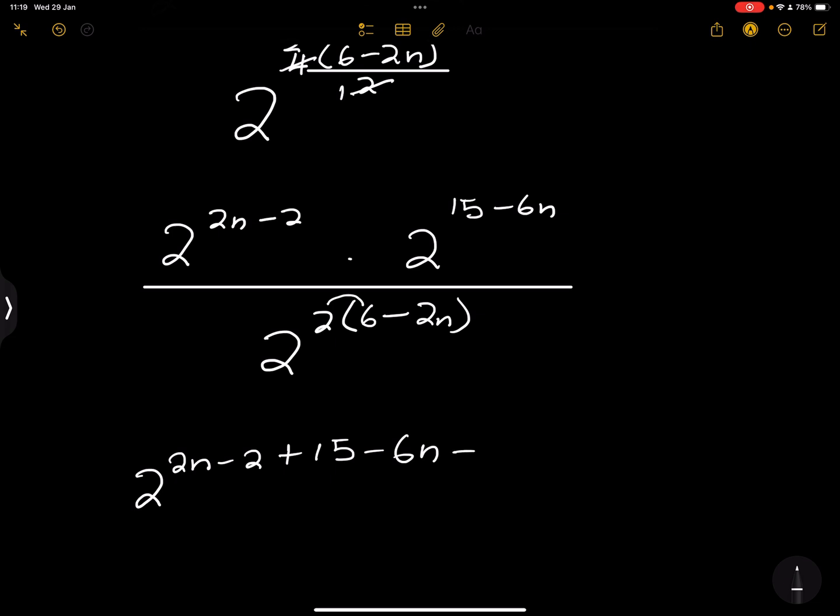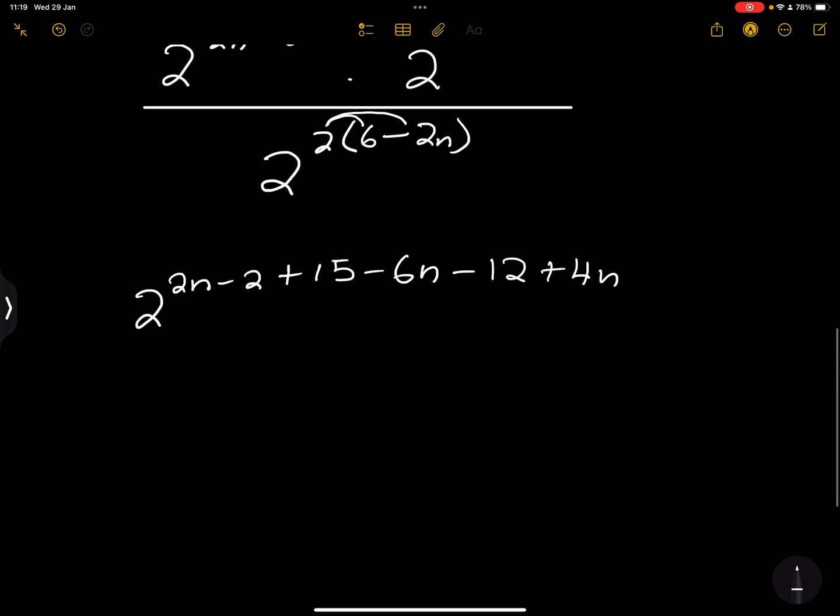But remember, at the denominator I've got 2 times 6, which is 12, so that becomes minus 12. I've got 2 times negative 2n, which is minus 4n, but remember it changes sign when it gets to the numerator, so that's plus 4n.